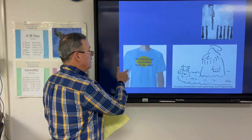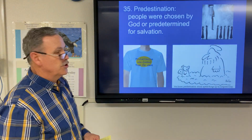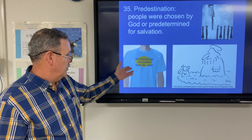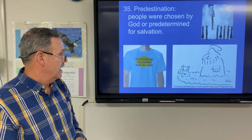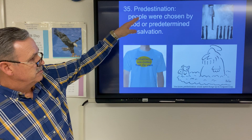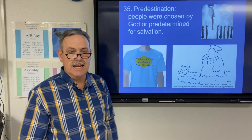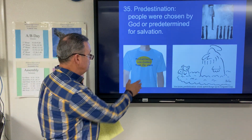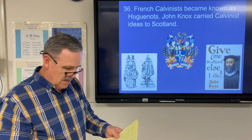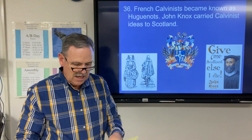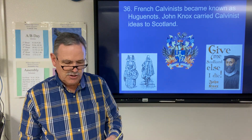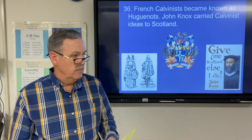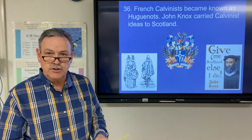People were chosen by God or predetermined for salvation. French Calvinists became known as Huguenots, and John Knox carried Calvinist ideas into Scotland. We'll be talking about Huguenots a little bit later in another unit.